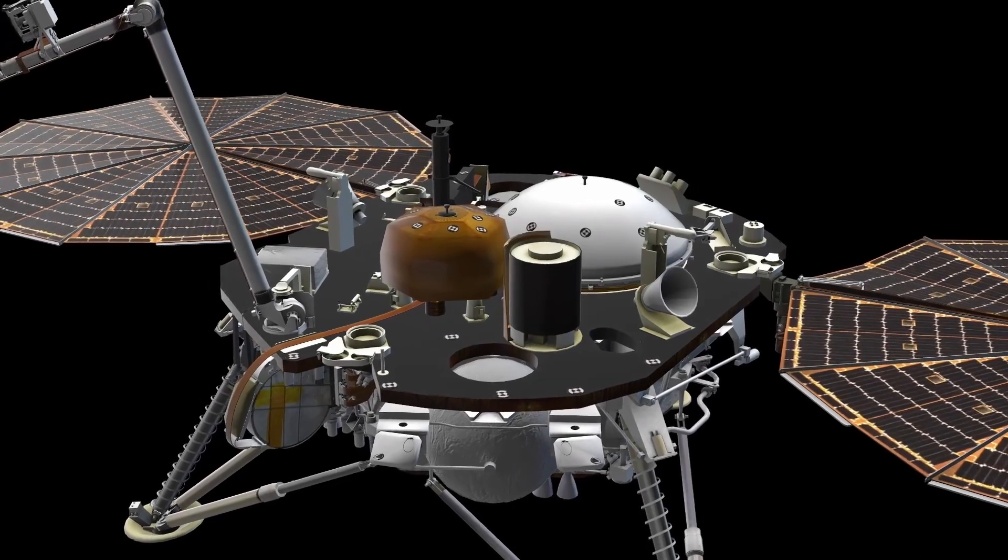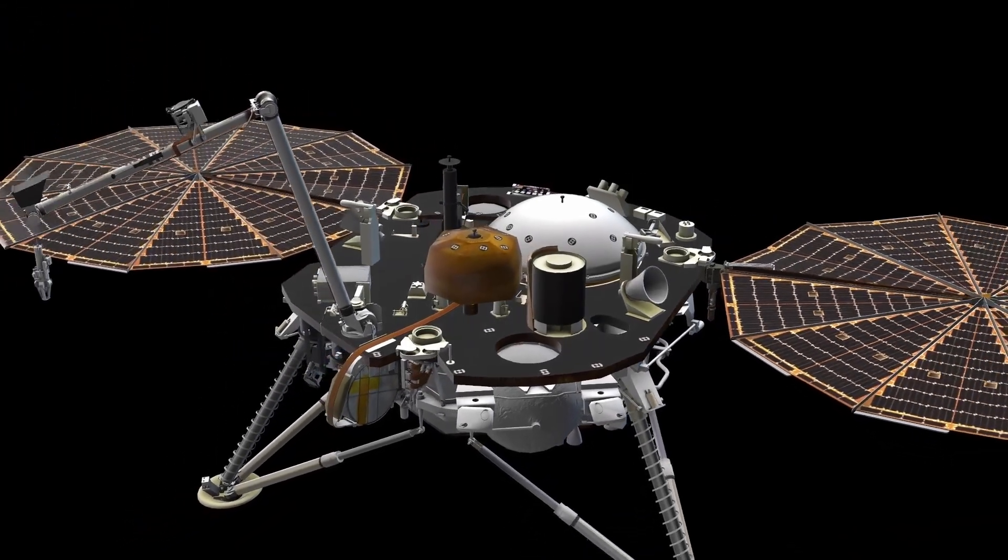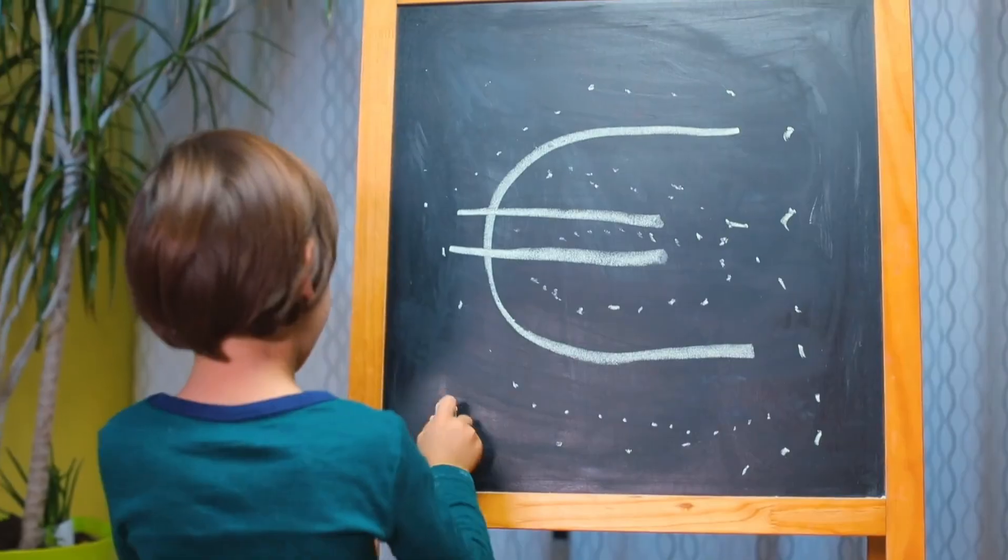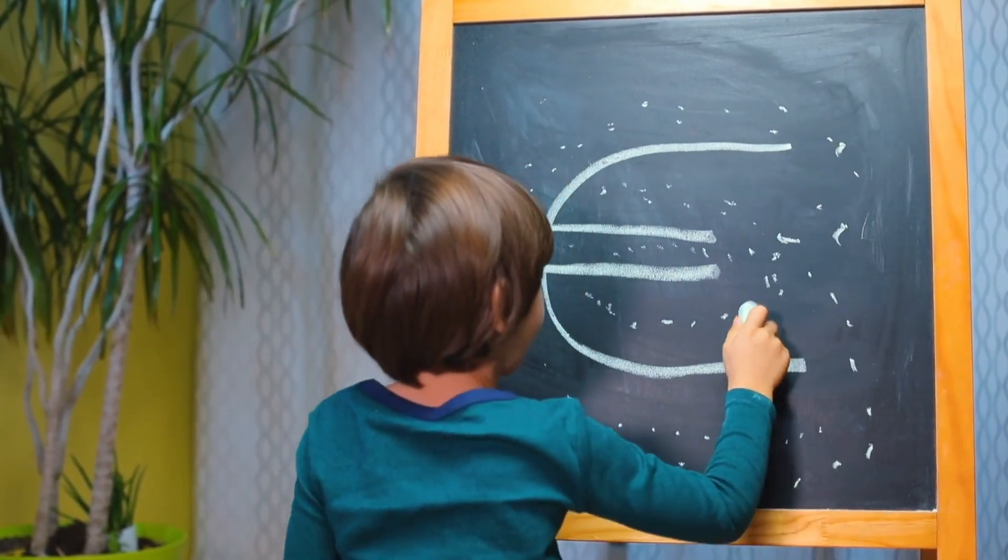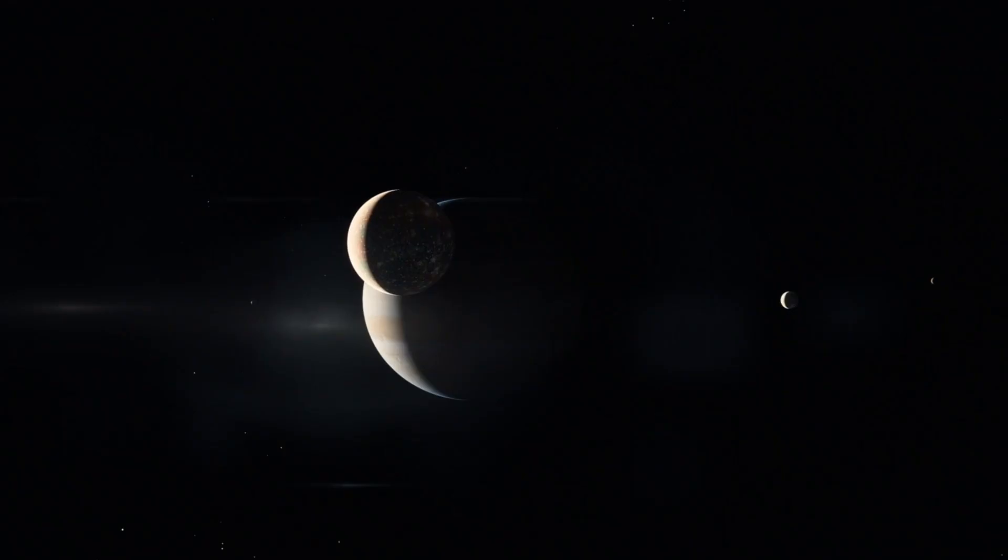For 46 years, Voyager 1 has been silently drifting into the abyss, a lonely traveler on a one-way path beyond the warmth of our sun and the reach of any planet, deeper into the void than any human-made object has ever dared to go.